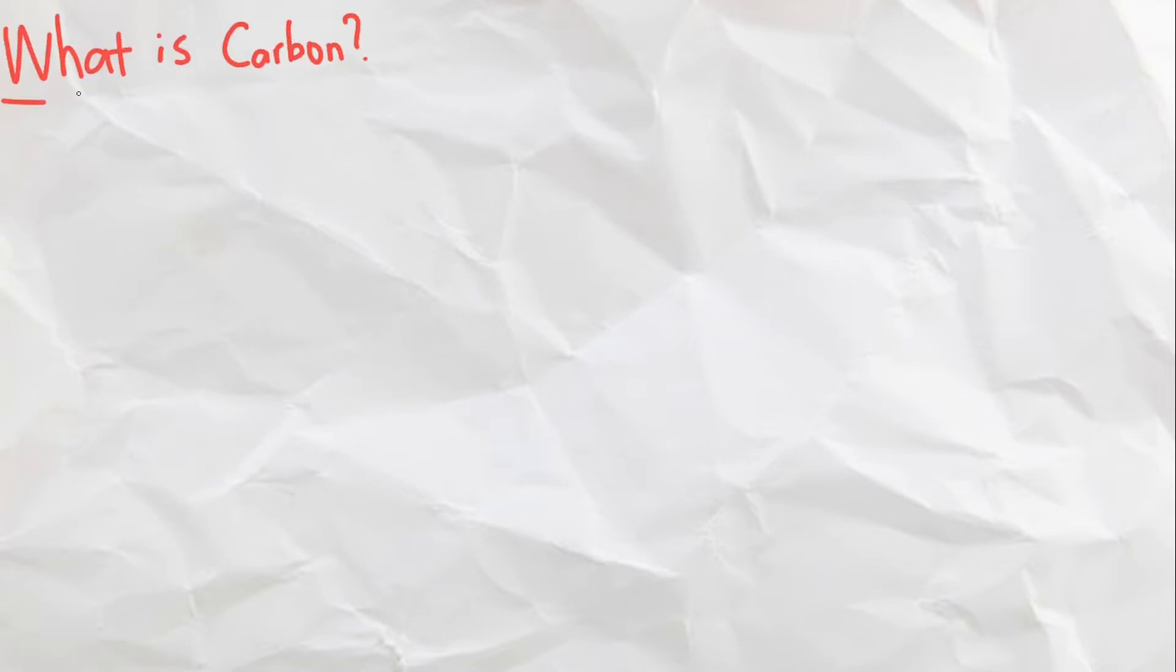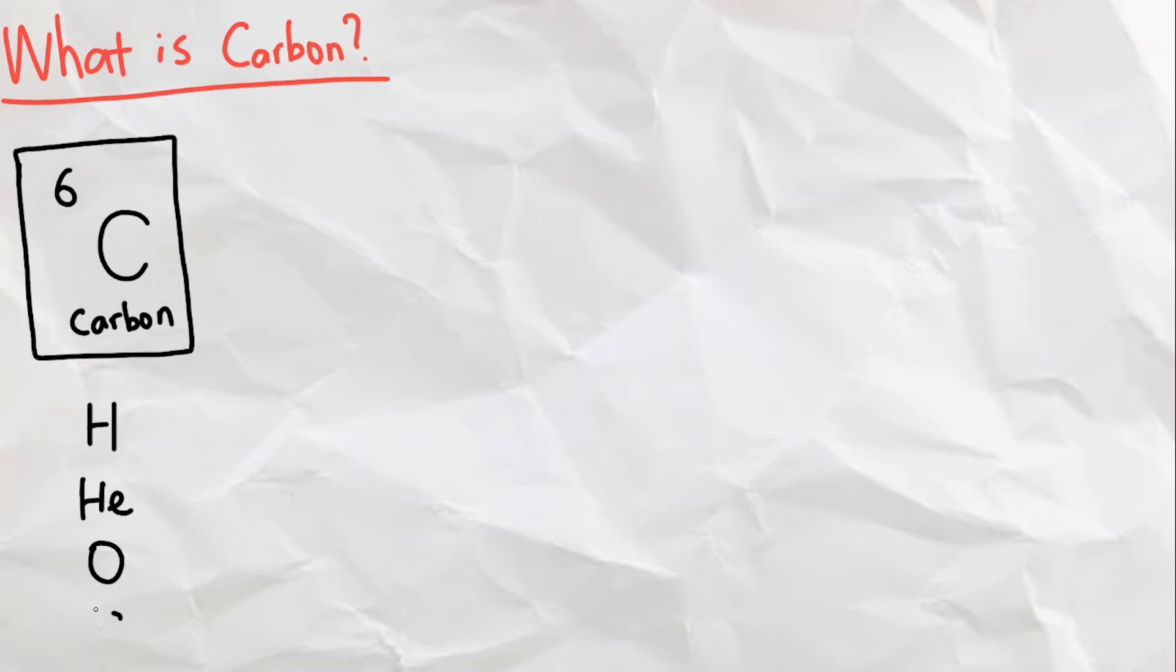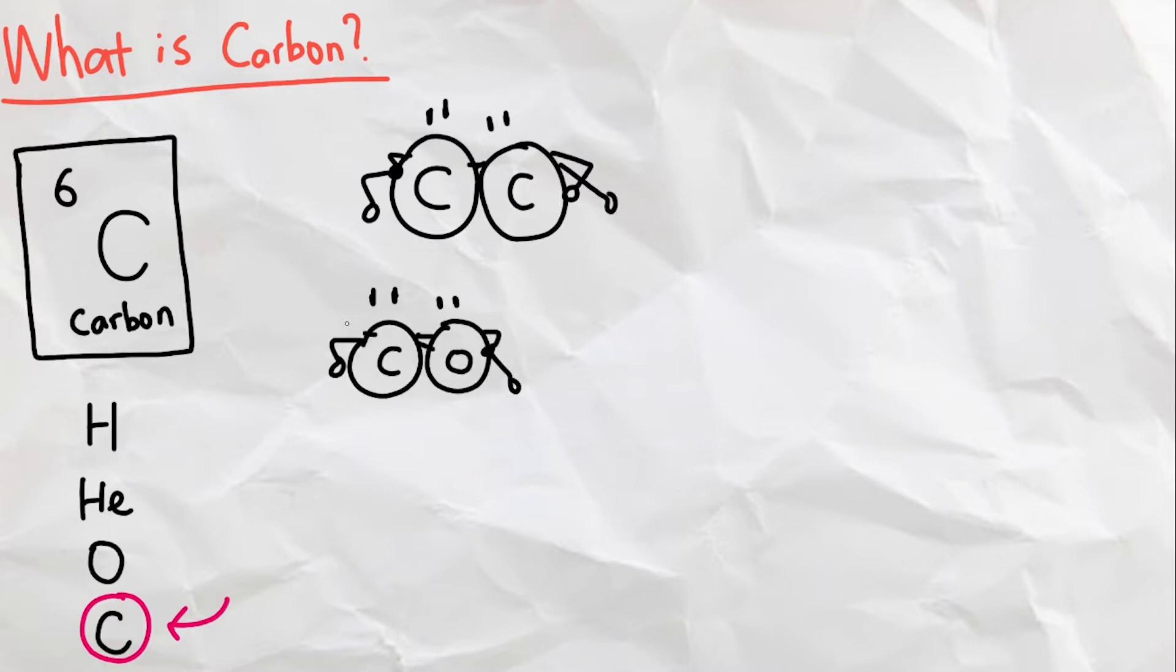So what even is carbon? Carbon is the sixth element on the periodic table and the fourth most abundant element in the universe. The most important and relevant property of carbon is that it can form very stable bonds not only with itself but with many other elements as well. Since it has four valence electrons, and it needs eight total valence electrons to become stable, it has many options.